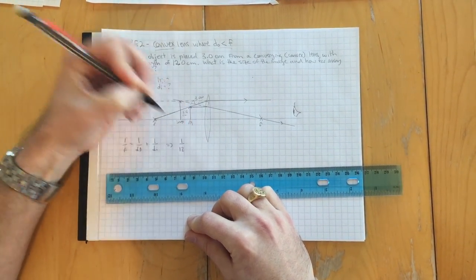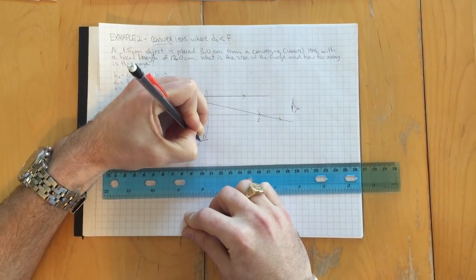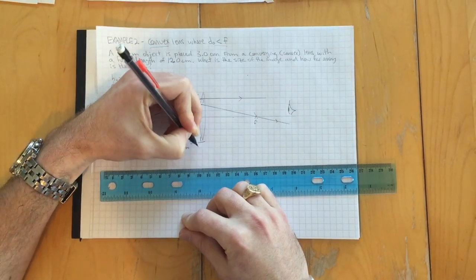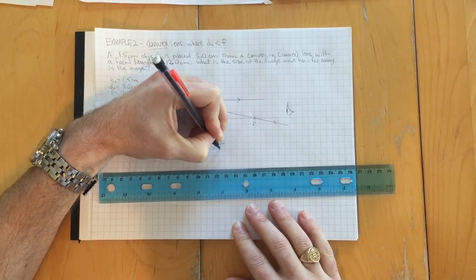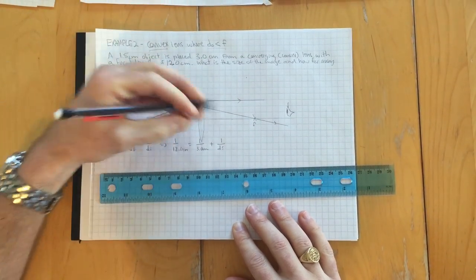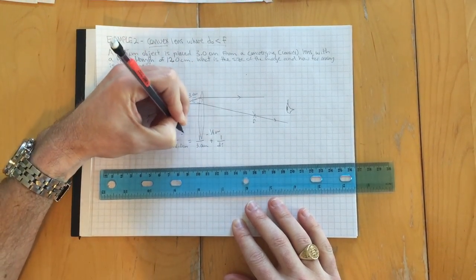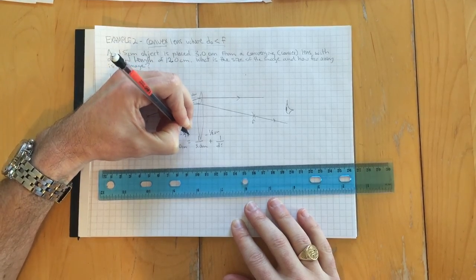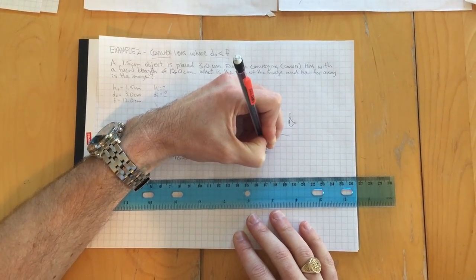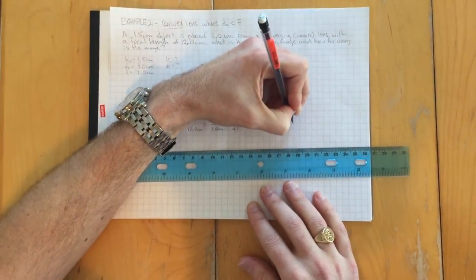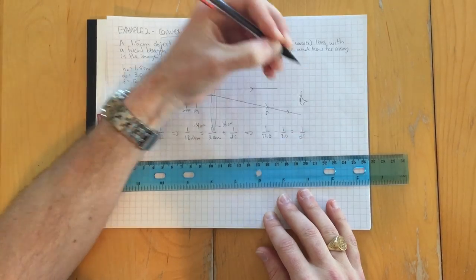It's one over 12 centimeters, 12.0 equals one over three centimeters here, plus one over DI here. Again, we'll subtract off the whole fraction on this side. And what we do to one side, we must do to the other and we get one over 12 minus one over three. I'm ignoring my units here. Remember this is no take two equals one over DI.